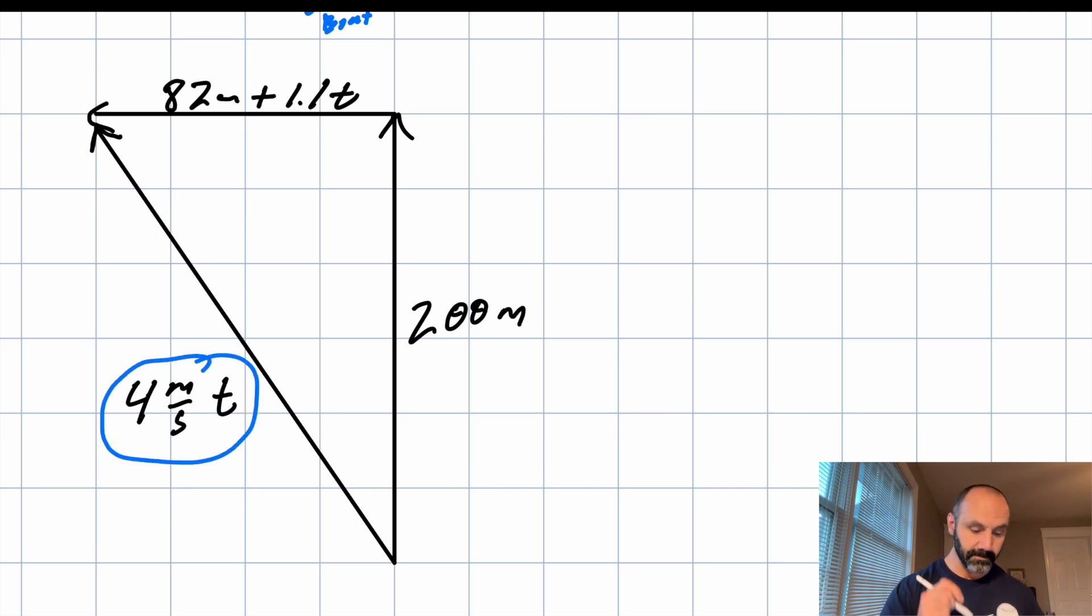And then this triangle, or the hypotenuse, you could say, is four meters per second t. That's the velocity of the boat. This is all relative to the water, right? So relative to the water, the boat is moving four meters per second. And then that times the total time it takes, which is the same as this t. So I only have one unknown here in the t.